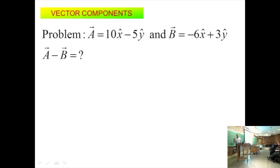Let's get to the idea. If I give you a quantity that is a vector, you need to get its components using SOHCAHTOA, and we'll do lots of examples of it. But if it's in components already, so I have these problems: A is 10x minus 5y, and B is negative 6x plus 3y.